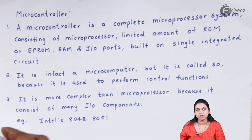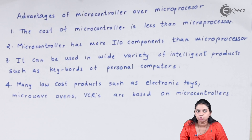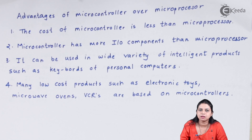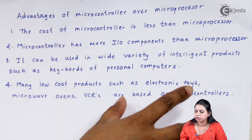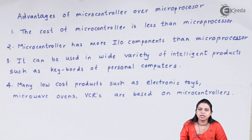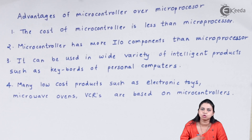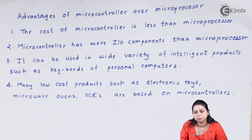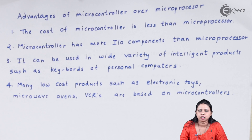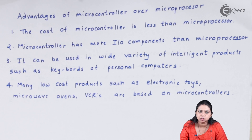Next are the applications of microcontroller, or you can say advantages of microcontroller over microprocessor. Number one advantage is that it is low cost — cheaper than a microprocessor. Number two, a microcontroller has more input-output components, which is why it is more complex. Number three, it can be used in many low-cost products such as electronic toys, microwave ovens, machines, chemical instrumentation, and medical instrumentation.